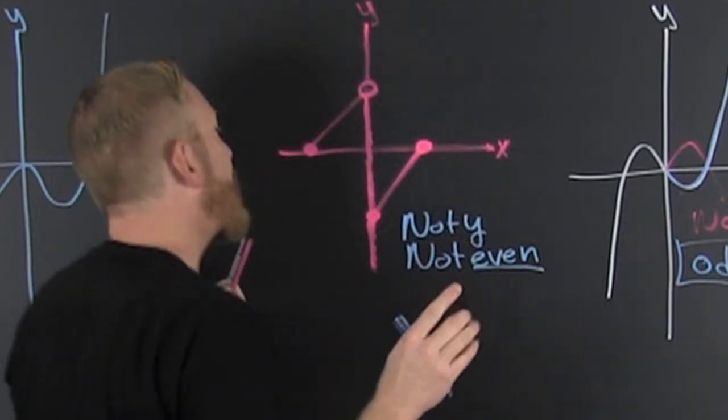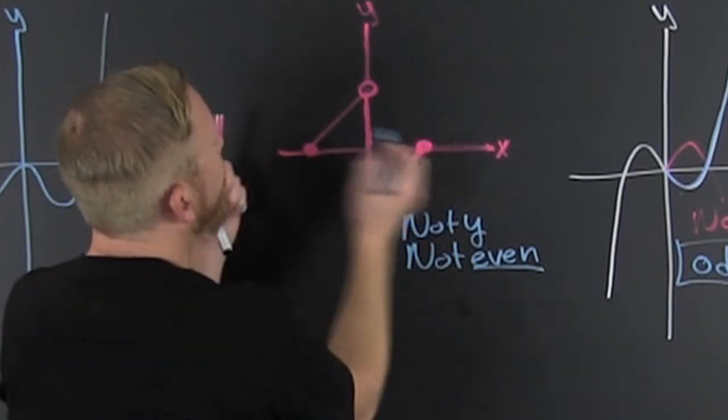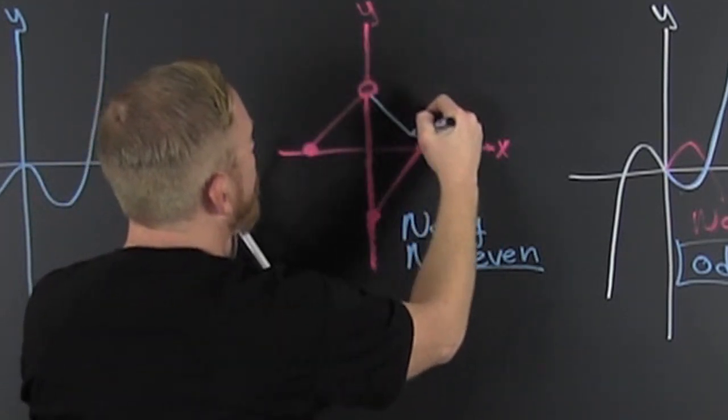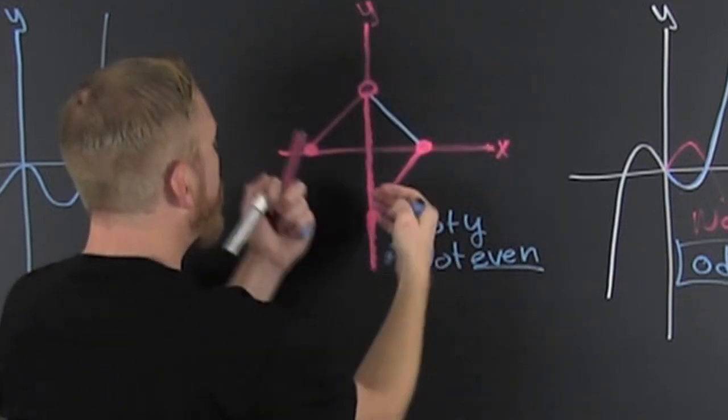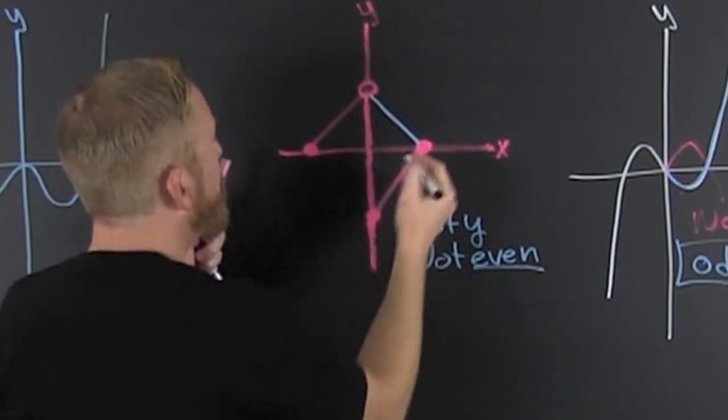Okay! So, now we're checking to see if it's odd. So, we fold it across the y. And then we fold it across the x.